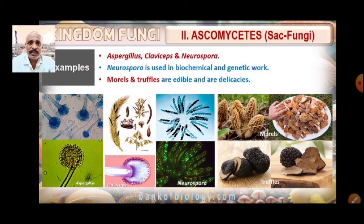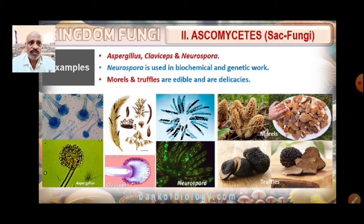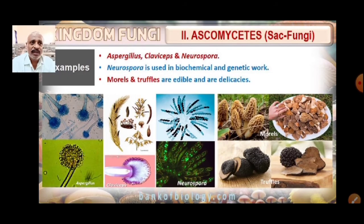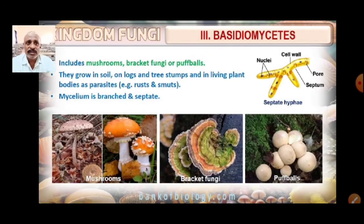Examples of Ascomycetes include Aspergillus, Claviceps, and Neurospora. Neurospora is used in biochemical and genetic work. Morels and truffles are also Ascomycetes examples, and these are edible and considered delicacies. That covers the Ascomycetes.